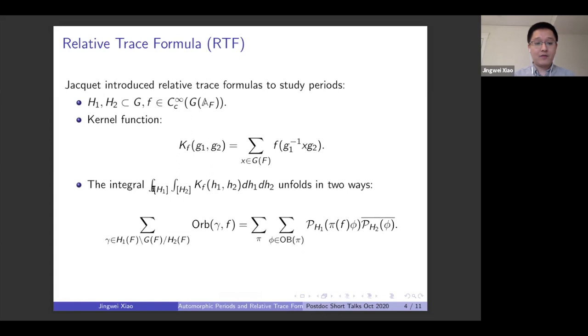And this is the kernel function that defines the action of F on the automorphic spectrum of G. And I want to consider the integrations of the kernel function over the adelic quotient of the subgroups. And as usual in the trace formula, this integration can be unfolded in different ways.